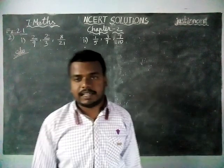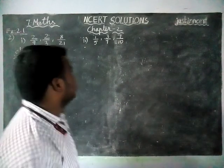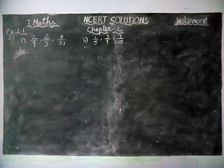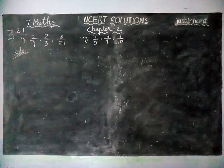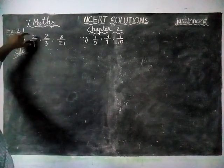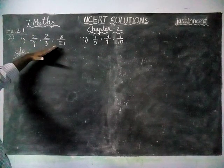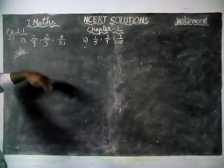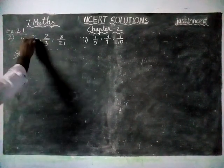Here they have given some fractions and they ask us to arrange it in descending order, from the smallest value to highest value. If it is like fractions, we can find it easily. Now this is in unlike fraction, first we have to convert into like fractions.